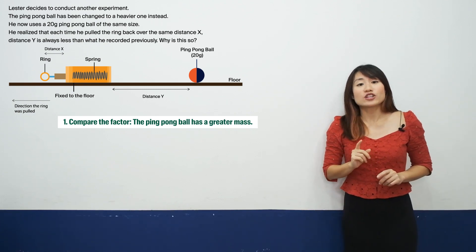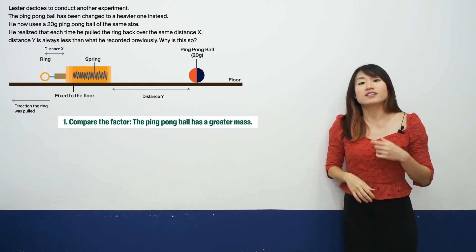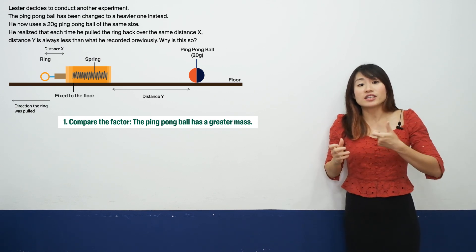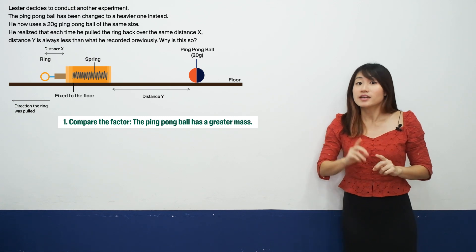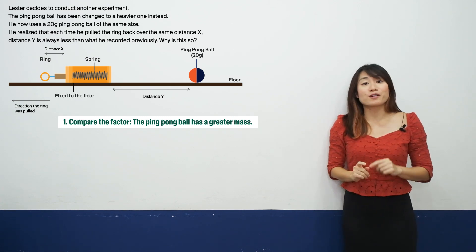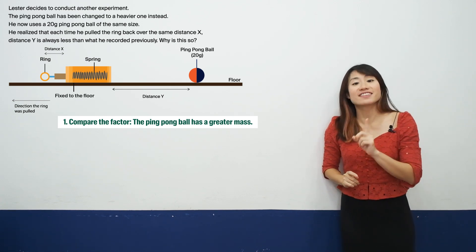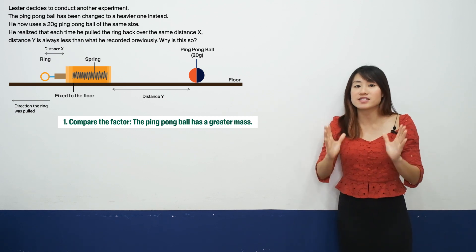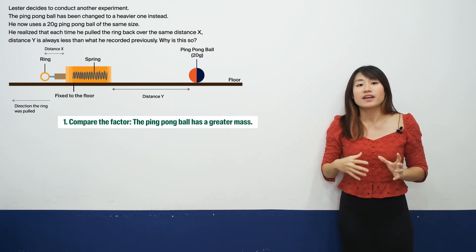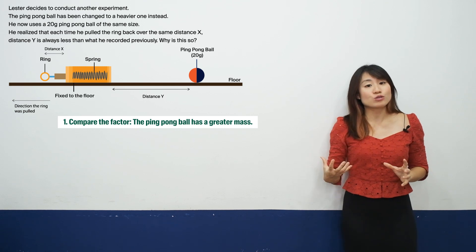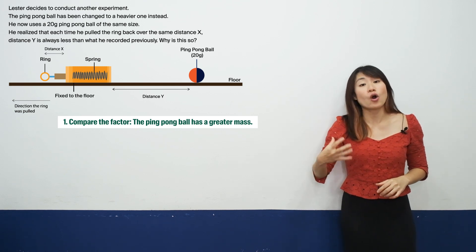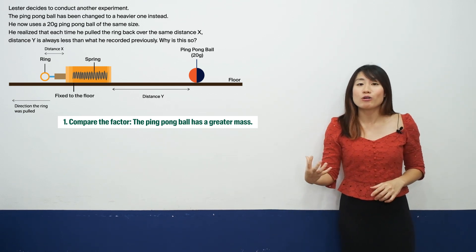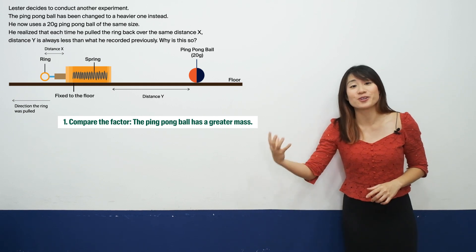Even though we are changing the mass of the ball, the distance of the ring after it is pulled back remains the same. This also means that the amount of elastic spring force acting on the spring remains the same as well. And similarly, we can also say the spring possesses or stores the same amount of elastic potential energy.